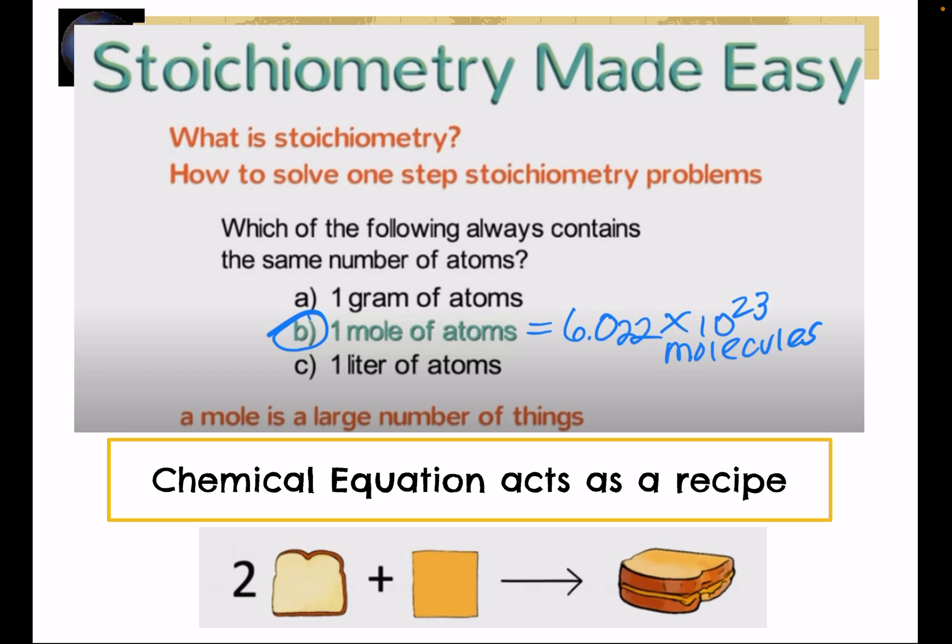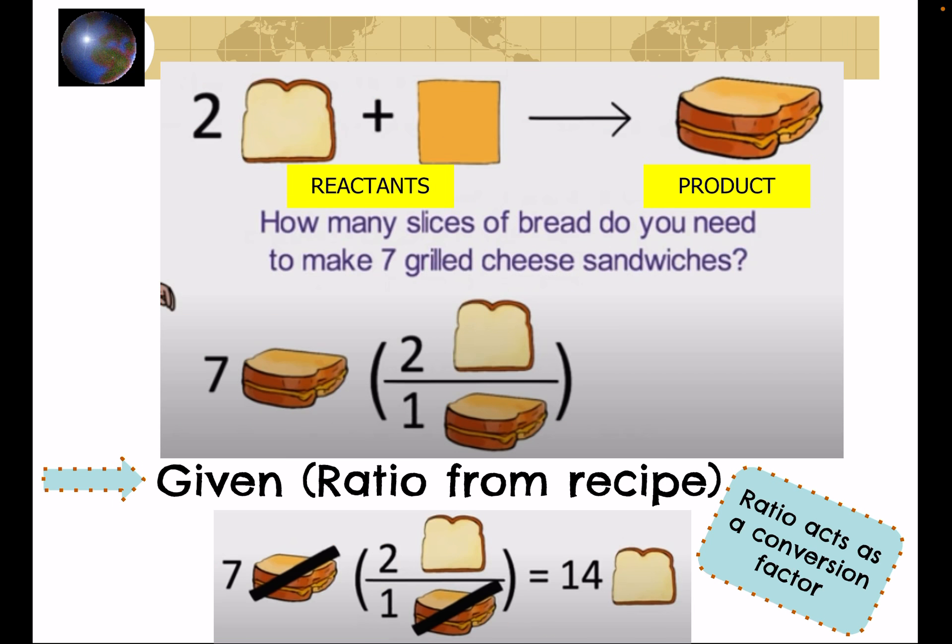Take for instance the example of sandwiches. Two pieces of bread, one piece of cheese makes one sandwich. If you represented it in a balanced equation it would look like this one. The bread and the cheese are the reactants. They are the things that need to be put together in order to make product. And you notice they happen to be on the left of the arrow. Reactants are always on the left, products are always on the right.